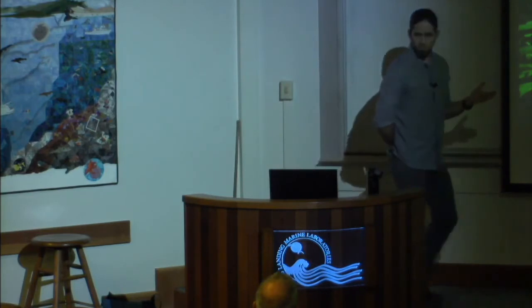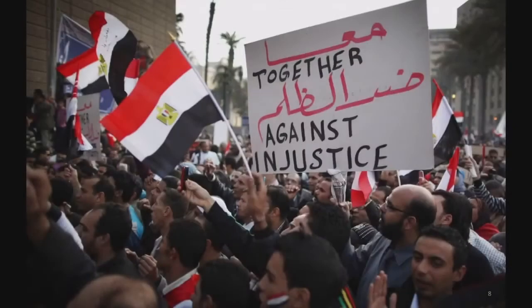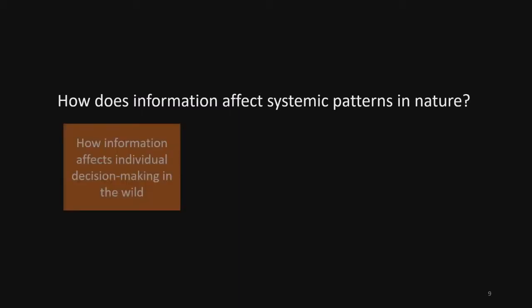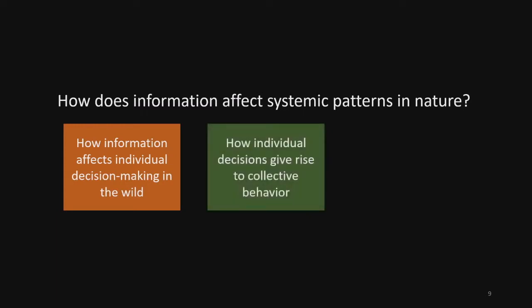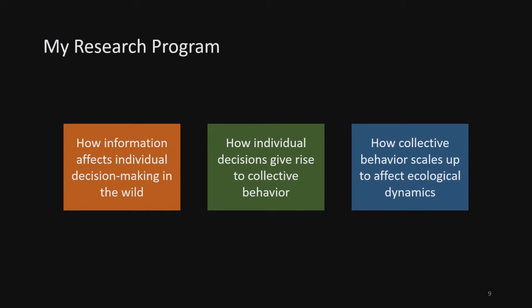If we look to the human world, we can get some clues, because we know that social information can drive collective behavior in humans that can lead to systemic change. To understand how information may affect systemic patterns in nature, we must understand how information affects individual decision-making in the wild, how individual decisions give rise to collective behavior, and how collective behaviors scale up to affect ecological dynamics. These three aims form the basis for my research program and outline the three projects I'll talk about today.